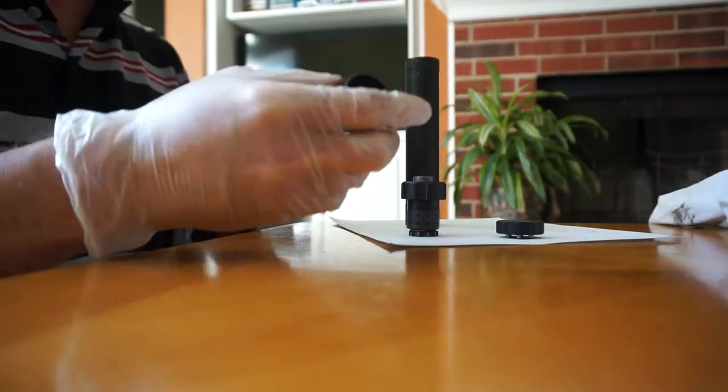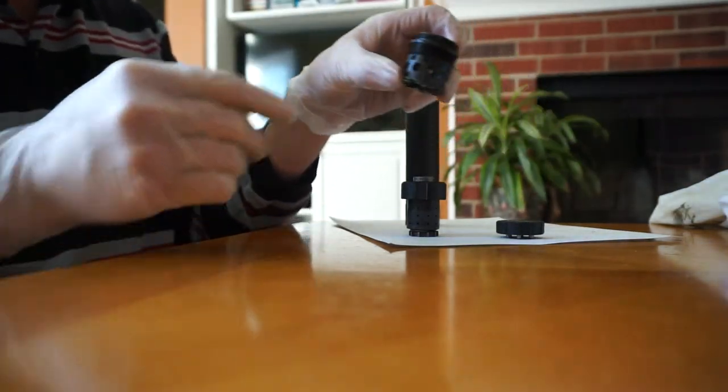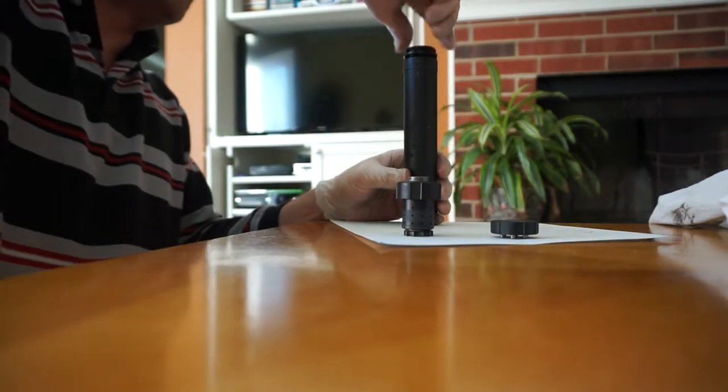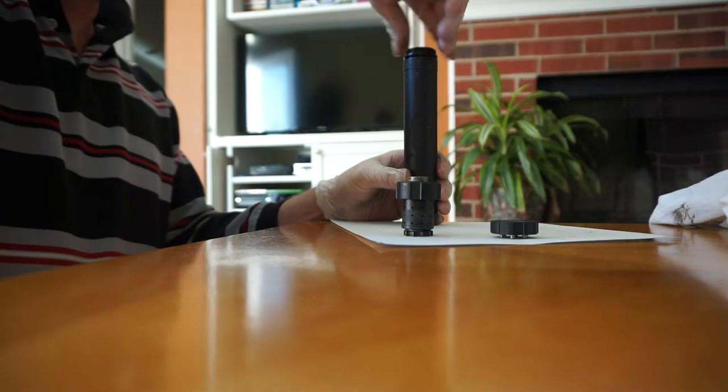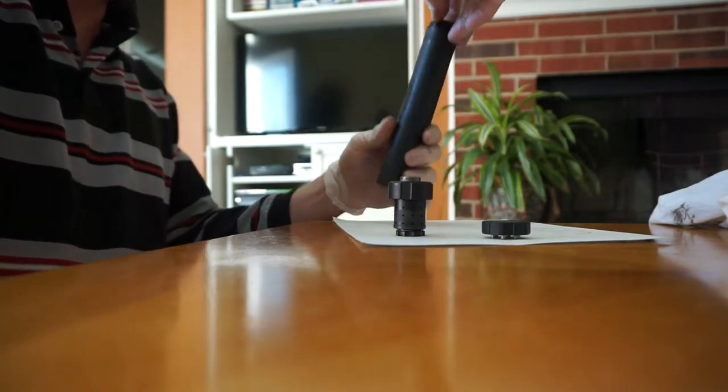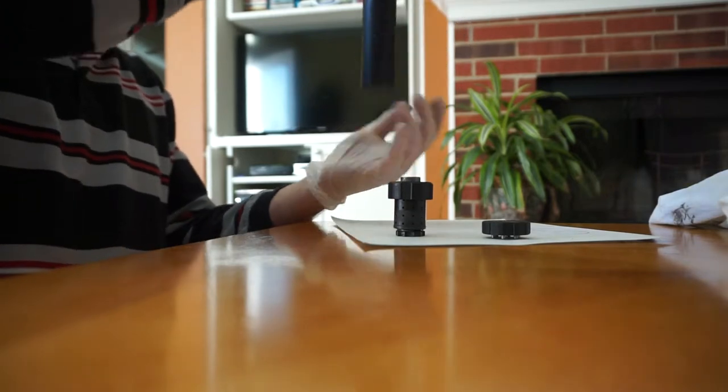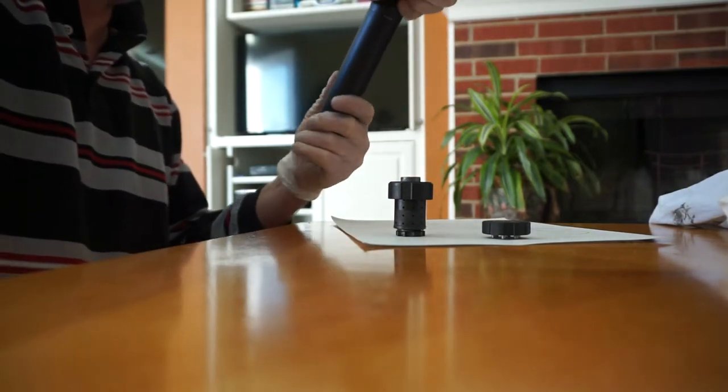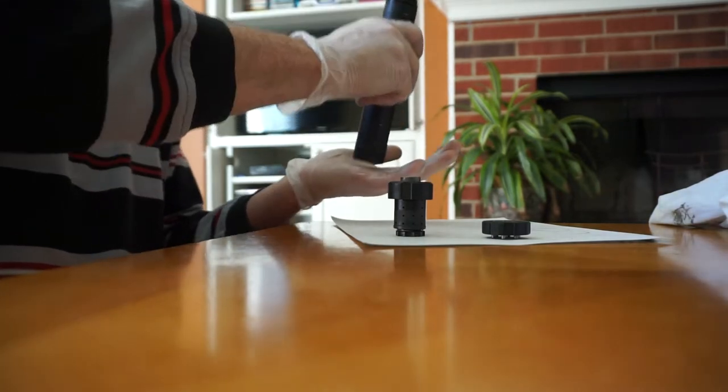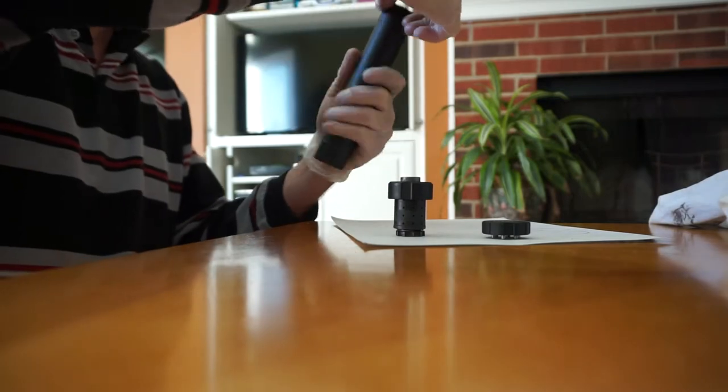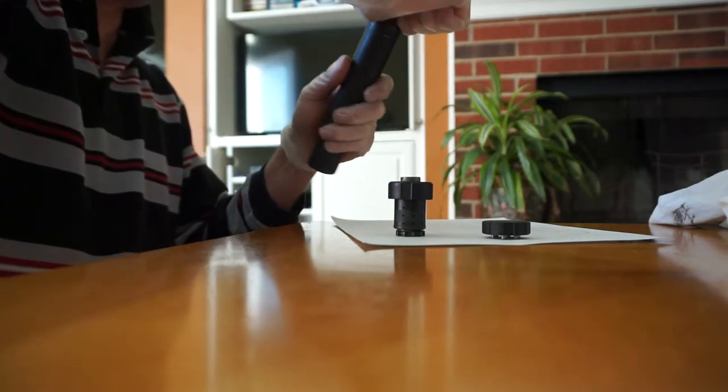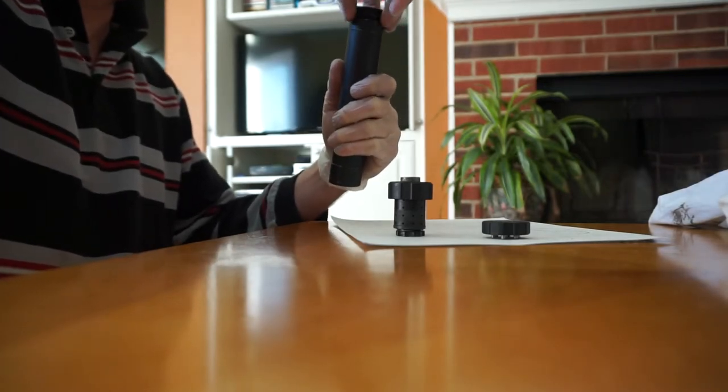Next, take this and screw it in. Drop it in the top and then screw that in. If it doesn't screw in tight, that means you've probably got some grit or something that you can clean out a little bit better.